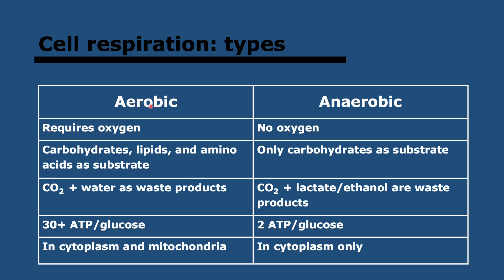To summarize: aerobic respiration uses oxygen, can use many compounds as substrates, has CO2 and water as waste products, and has a really high yield of ATP per glucose. In anaerobic respiration, the yield is much lower, but it can be used when there's no oxygen — which is an advantage during very intense physical exercise — and lactate, a toxic product, is released.